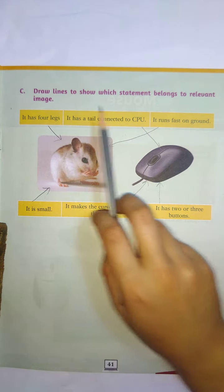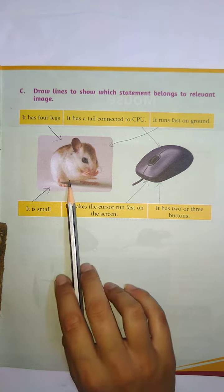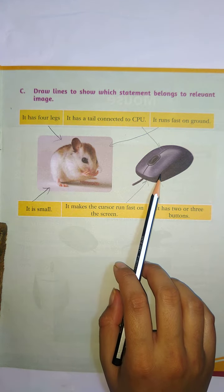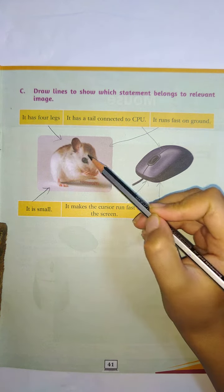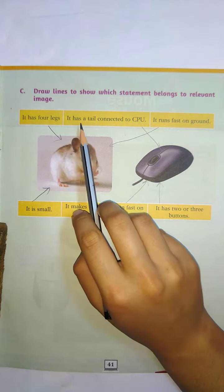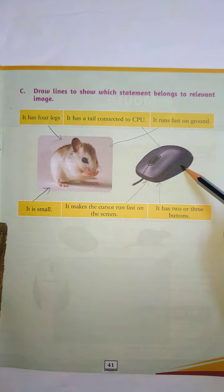Draw lines to show which statement belongs to relevant images. This is the real mouse. And this is the computer's mouse. Now it has 4 legs. So real mouse.